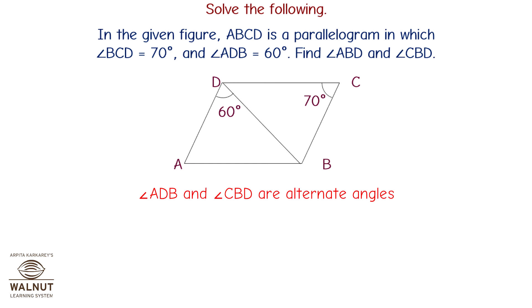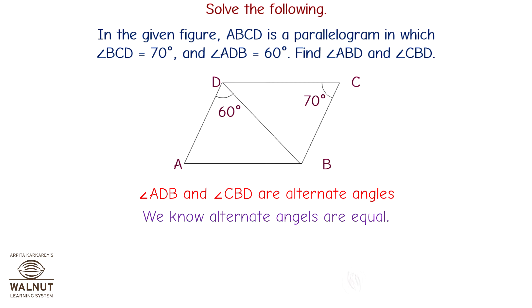Angle ADB and angle CBD are alternate angles. Since alternate angles are equal, angle CBD equals angle ADB, which is 60 degrees.